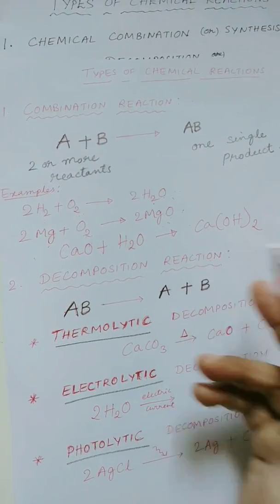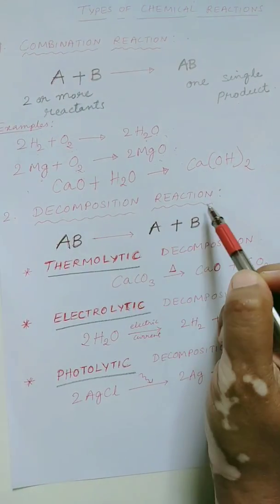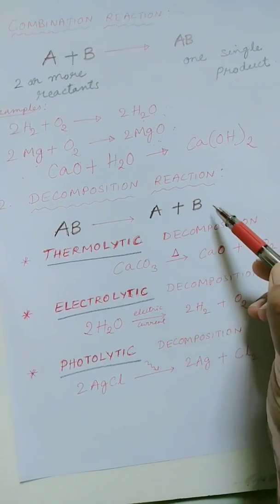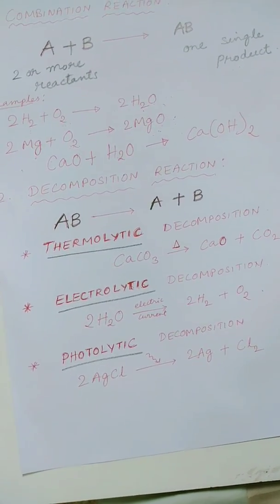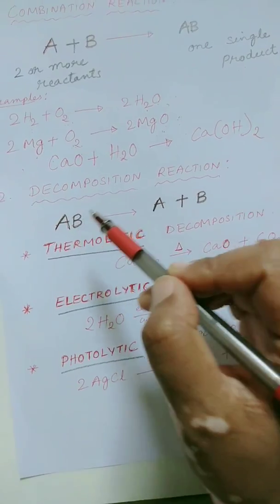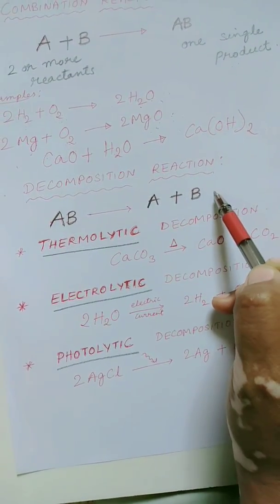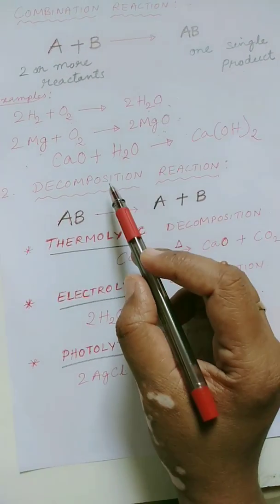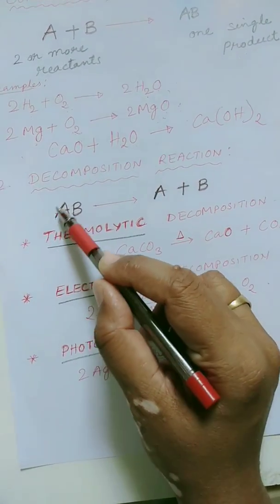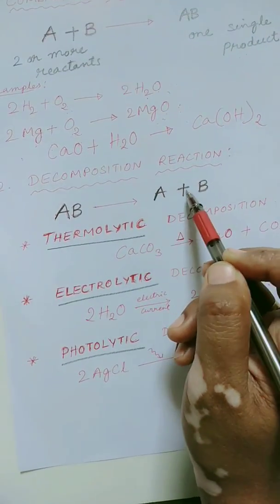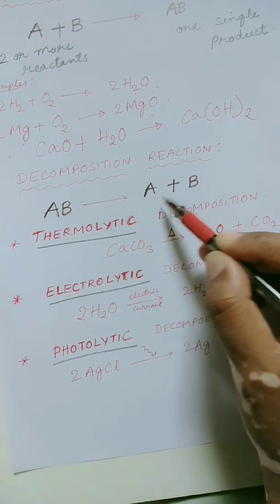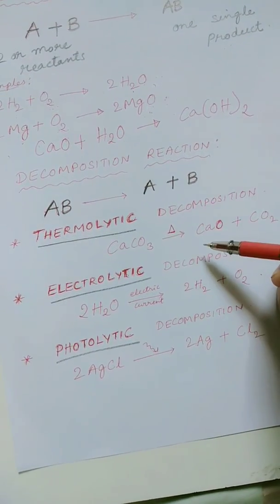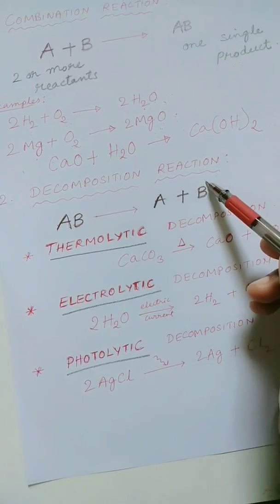Now let us come to the decomposition reaction. In the decomposition reaction, one compound — a single larger compound — breaks down into two or more simpler substances. A single larger substance breaks down into two or more simpler substances; these substances can be either compounds or elements. This is the general reaction where AB, one compound, breaks down into its individual or different substances, which can be either elements or compounds. Before going to the examples, let us see the subtypes of decomposition reaction.